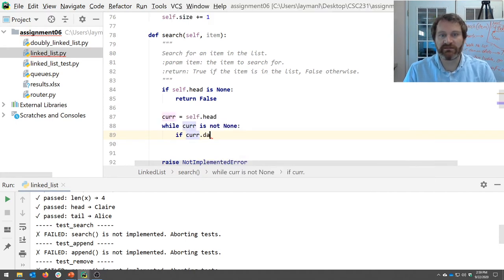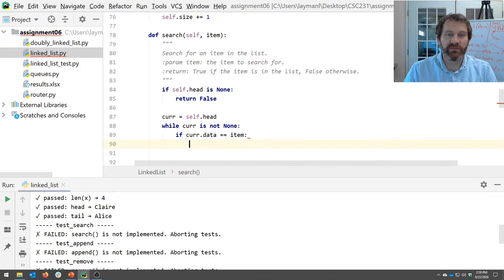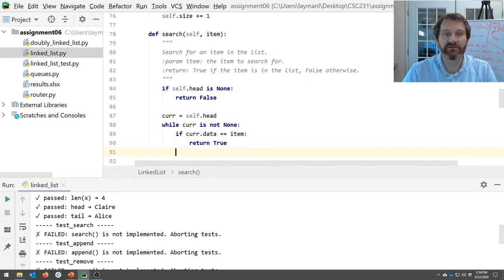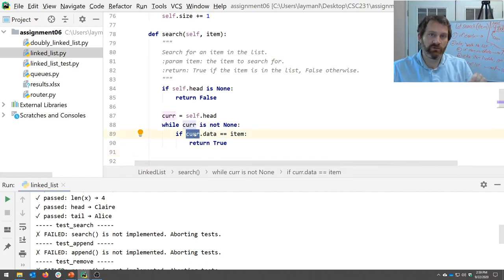How do I check that node's value? If cur.data equal equals the item, the item I'm looking for, the parameter, then I have found it. Return true. It's there.